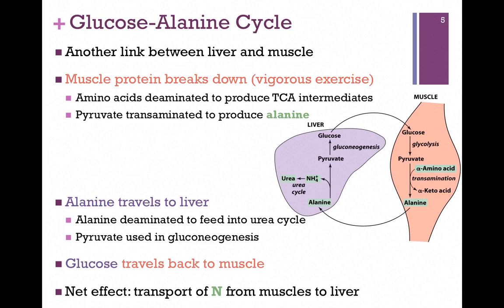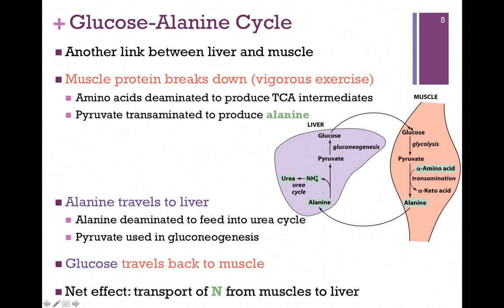The next cycle is the glucose-alanine cycle, and this is another link between liver and muscle, illustrated in our figure here. In this case, muscle protein breaks down under vigorous exercise, and amino acids are deaminated to produce citric acid cycle intermediates. Pyruvate produced by glycolysis is transaminated to form the amino acid alanine. Alanine then travels to the liver, and the liver deaminates it through the urea cycle to produce pyruvate, which it then uses through gluconeogenesis to produce glucose, which travels back to the muscle.